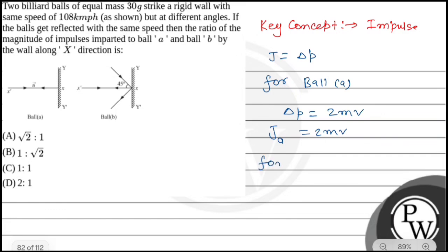And let's see for ball B. In this case, we have a ball coming from some angle. It's 45 degrees.